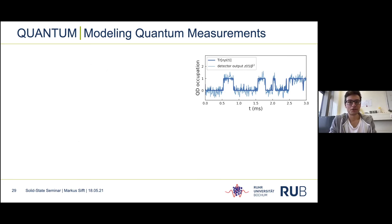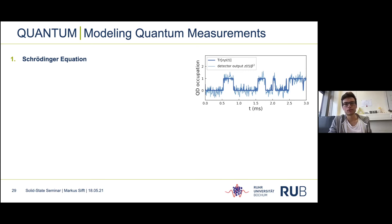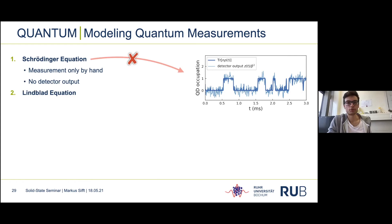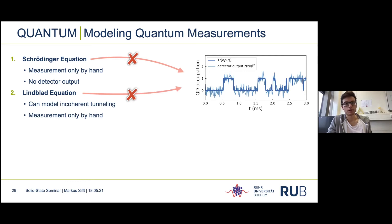The first goal is to model the detector output of quantum transport measurements. When thinking about the evolution of a quantum system, the first equation that comes to mind is the Schrödinger equation, but this is not sufficient — it does not include damping needed to model coupling to the environment or incoherent tunneling, and the measurement can only be modeled as a projection with no detector output given. The next improvement is the Lindblad equation, which works with density matrices and can model incoherent dynamics, but it still gives no equation for the detector output. The only way to also model the detector is by using the stochastic master equation.